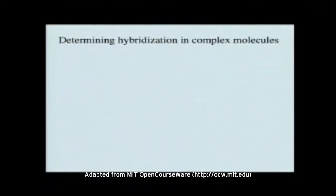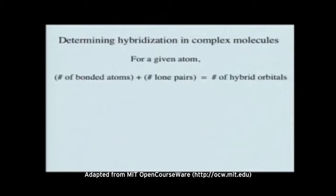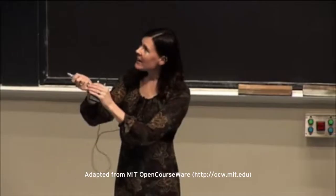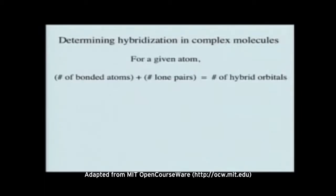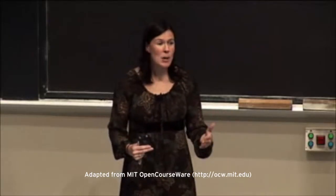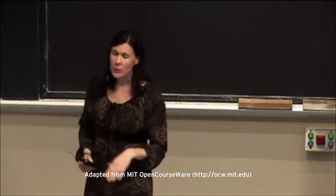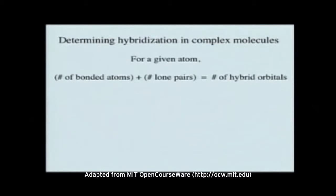So how do we go about determining hybridization in complex molecules? It's actually incredibly simple. For the given atom that you're looking at, you add up the number of atoms bonded to your central atom, plus the number of lone pairs, and what you end up with is the number of hybrid orbitals that you need. On an exam, you don't necessarily have to think through all the theory — you can just use this quick method.